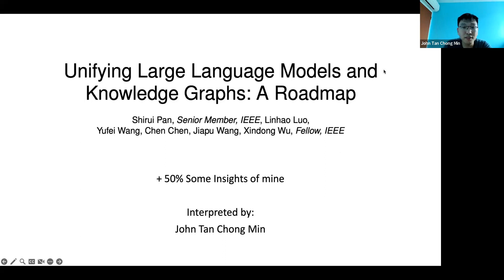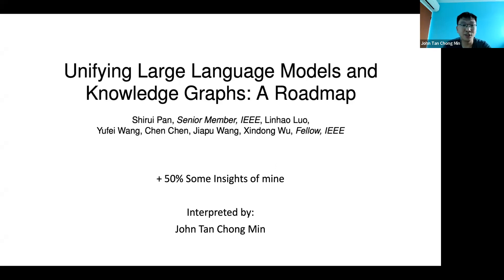I will roughly follow the framework of this paper called 'Unifying Large Language Models and Knowledge Graphs: A Roadmap,' by some IEEE fellows and senior members. I quite like the style of this paper, but a lot of the things surveyed are not the latest — they cover models from around the 2017 to 2019 era. So I've supplemented it with more recent advancements, like some LangChain stuff.